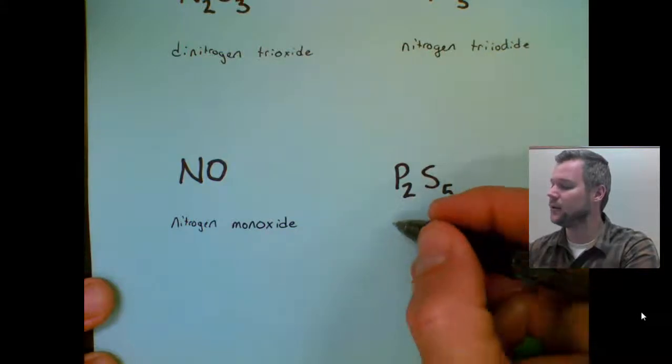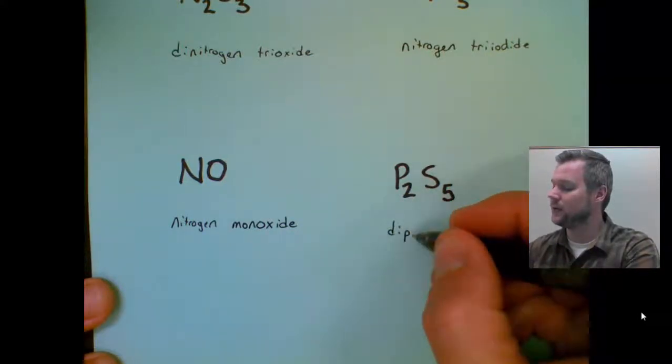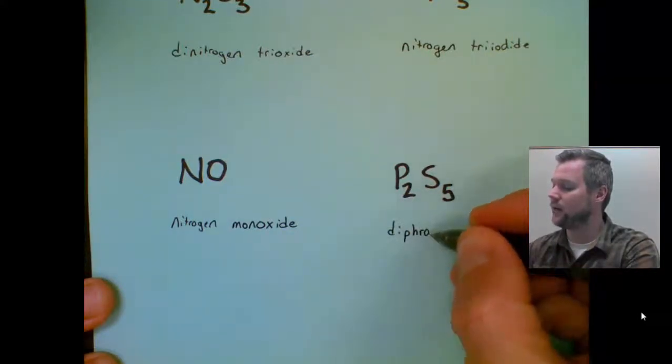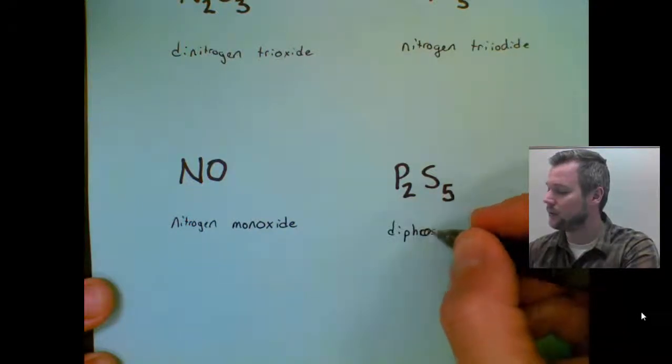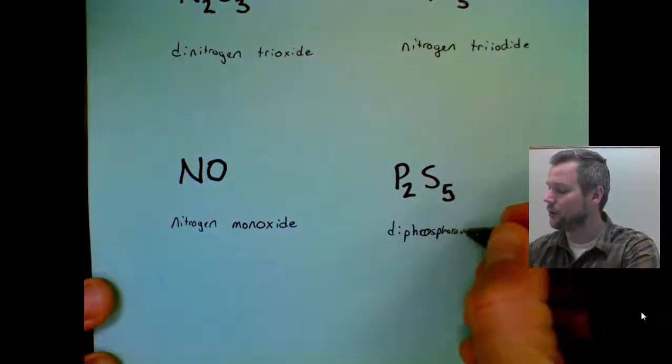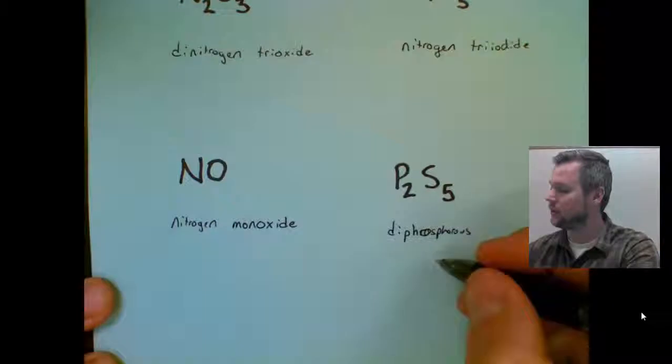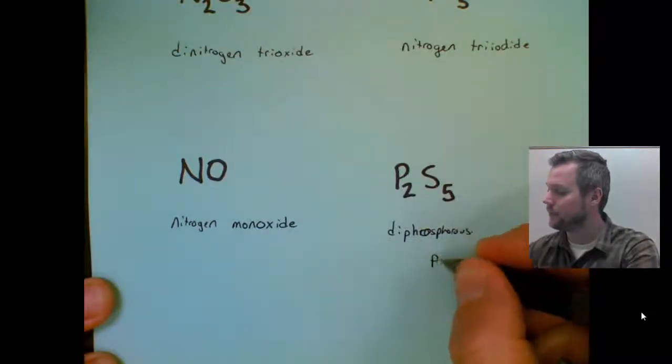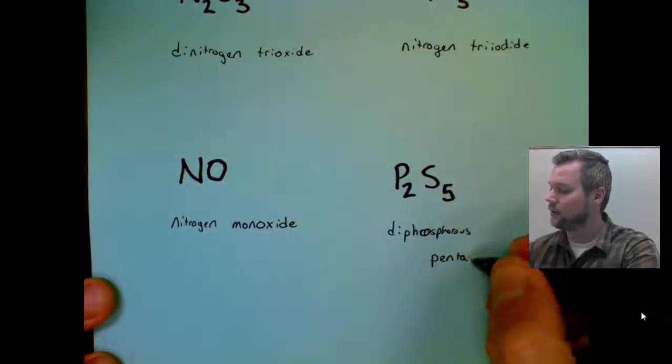And then we have di, because this time the subscript's two or greater, phosphorus. And then five is pent, pentasulfide.